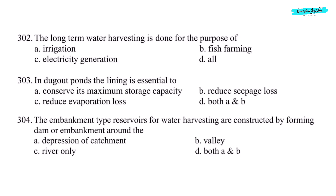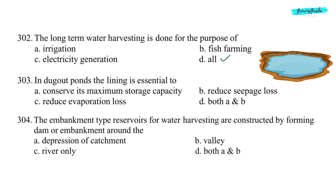Next question: long-term water harvesting is done for the purpose of — option D, all of the above. Next question: in dugout ponds, lining is essential to — option D, both A and B.